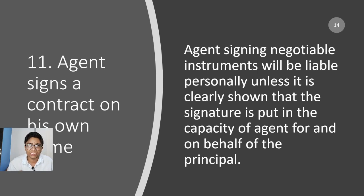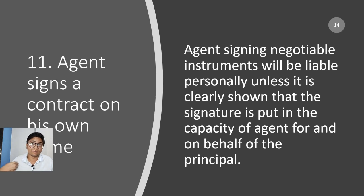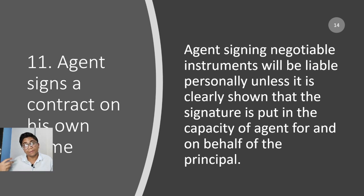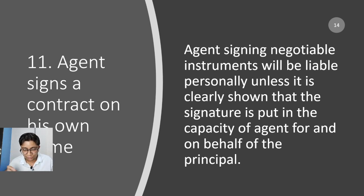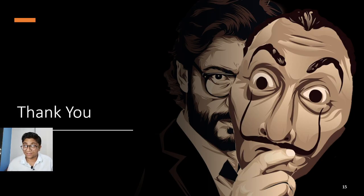Finally, when an agent signs a contract on his own name. Being your agent doesn't mean everything I do is on your behalf — I can also act in my personal capacity. When I act personally without mentioning it is on your behalf, only I will be responsible, not you as the principal. An agent signing negotiable instruments will be personally liable unless it is clearly shown that the signature is made in the capacity of agent on behalf of the principal.